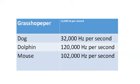This table shows how much vibrations are set in motion by different living things in a single second. Grasshopper can hear 32,000 hertz per second.